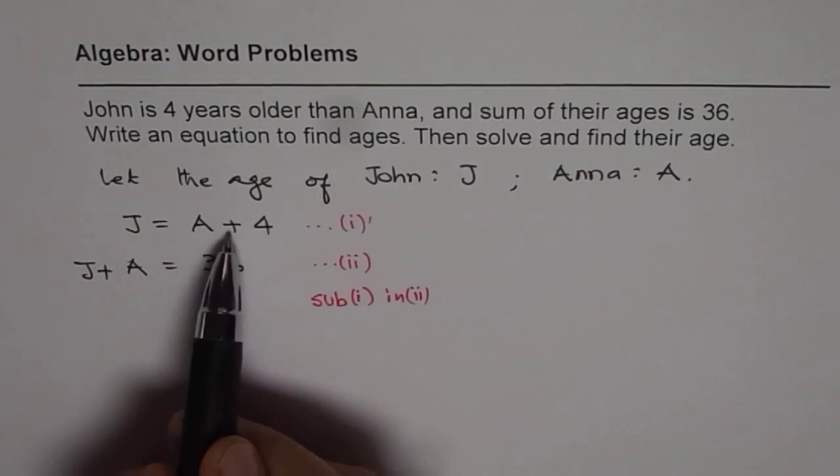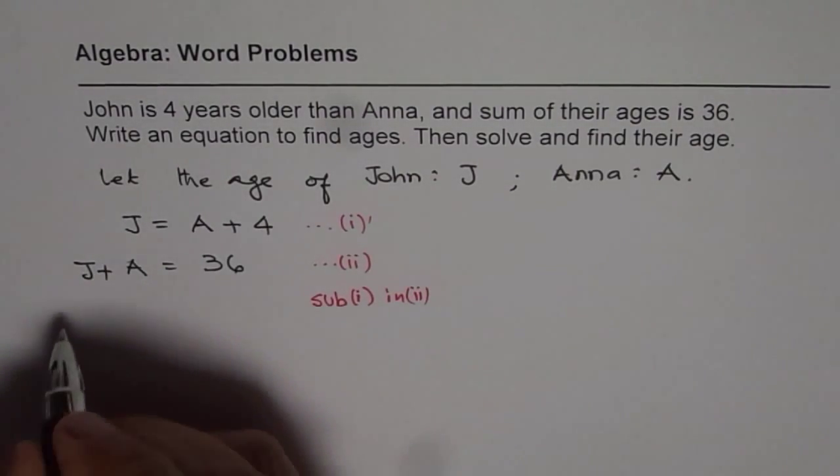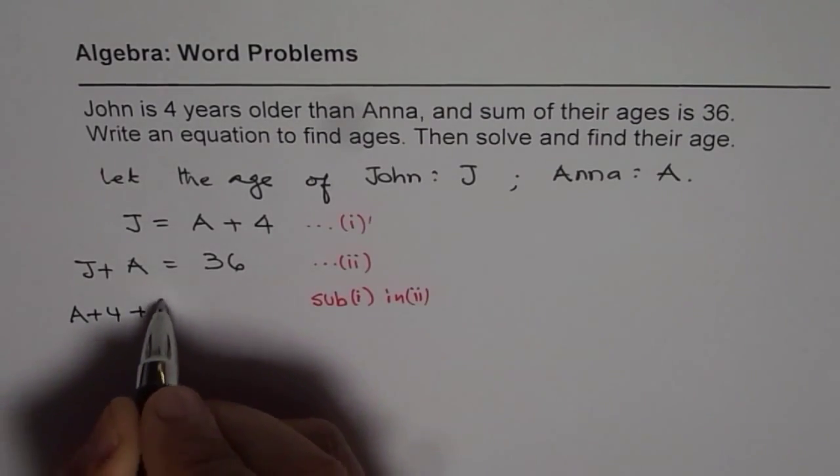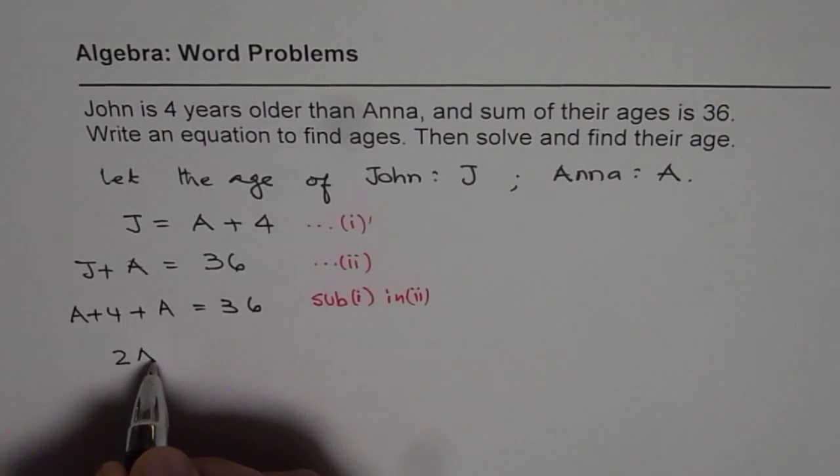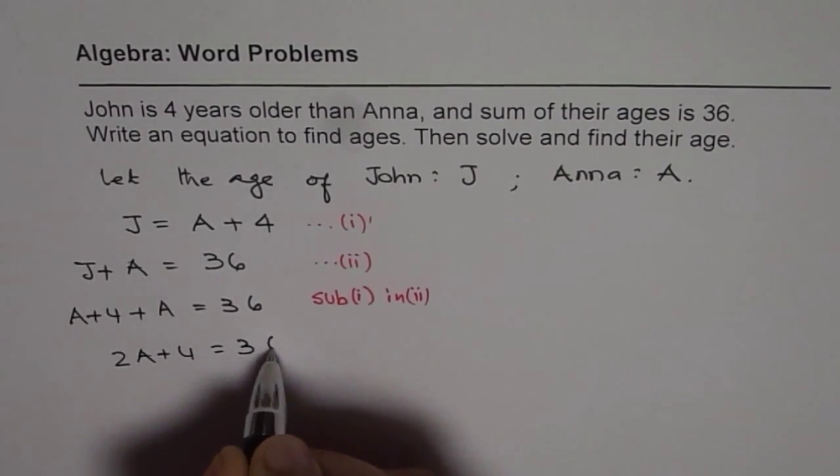And get an equation in just one variable. So J is A plus 4. We can write J as A plus 4 plus A equals 36. That gives us 2A plus 4 equals 36.